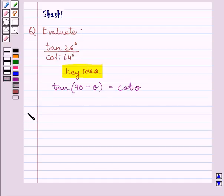Now let us start with the solution. We have to find tan 26 degrees upon cot 64 degrees. Now we know 64 degrees and 26 degrees are complementary angles. So, 26 degrees can be written as 90 minus 64 degrees.